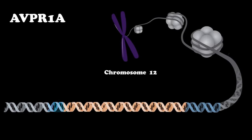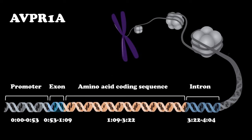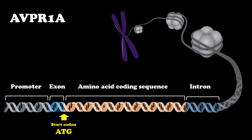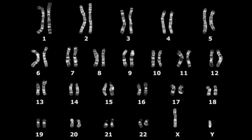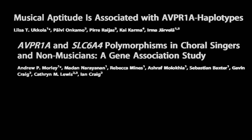The melody that you hear in this song comes from a string of DNA, and the different sections of this song correspond to the features of the AVPR1A gene. We took the DNA sequence from the promoter, first exon, first amino acid coding sequence, and first intron of AVPR1A. AVPR1A is found on chromosome 12 in humans, and variations in this gene have been associated with musical ability and other social behaviors like dancing.